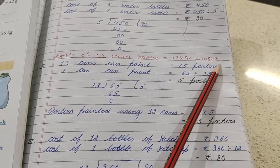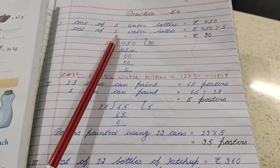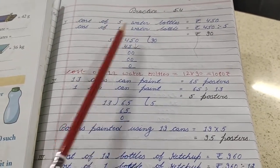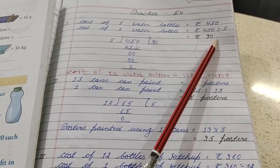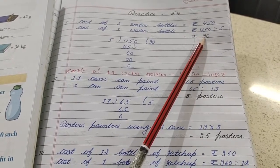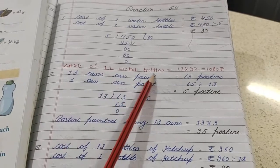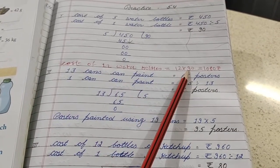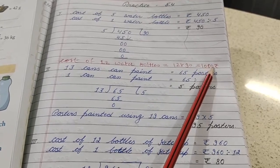So students, what did we do? We got the cost of 5 water bottles. We got the cost from 5 to 1. We were able to get from more to less. So we use the divide method. And we got the cost of 1. Where do we go from 1? To 12. When we go from 1 to more, we multiply. So we multiply by 12 and we get the answer 1,080 rupees. See the next step now.